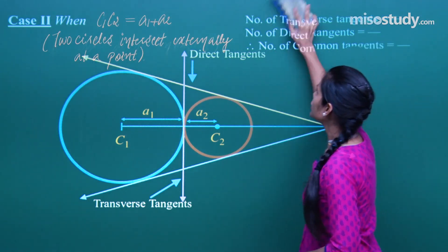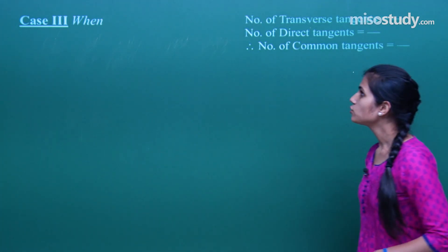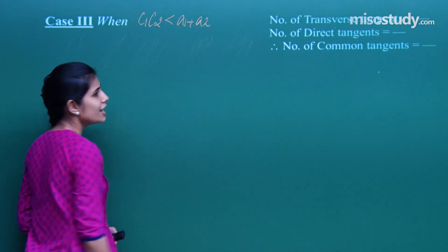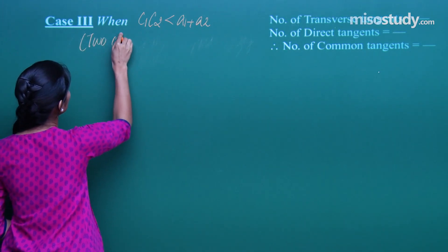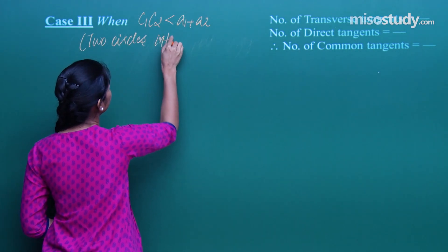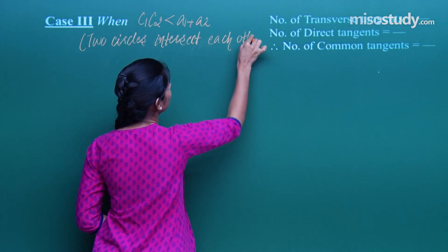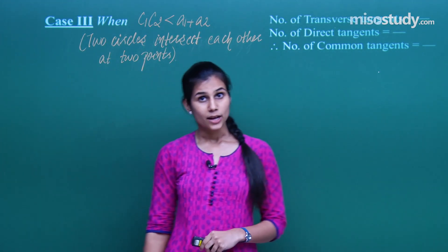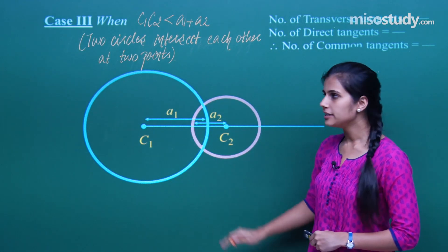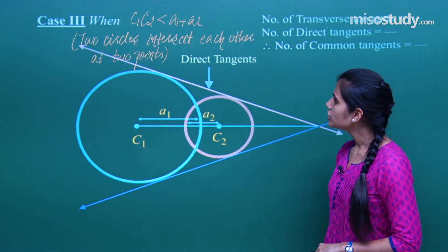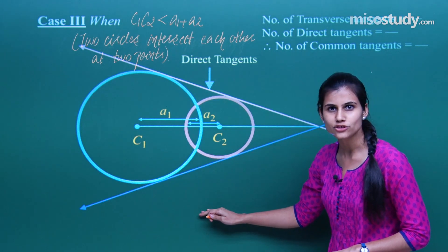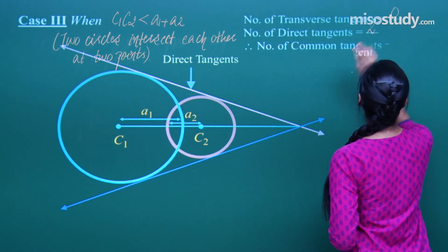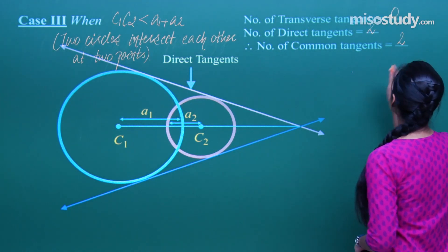Case 3: if the distance between the two centres is less than the sum of the radii but greater than the difference, the two circles intersect each other at two points. In this scenario, we have two distinct real direct tangents and absolutely no transverse tangent — two imaginary transverse tangents — making the total number of common tangents 2.